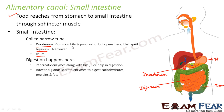The liver secretes bile juice, which is stored in the gallbladder. We need this bile juice for digestion. The pancreas also secretes pancreatic juice containing enzymes for digestion. The bile juice is carried from the gallbladder to the duodenum through a tube called the bile duct.